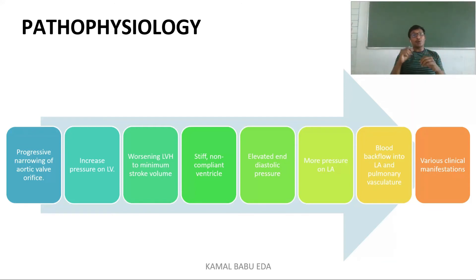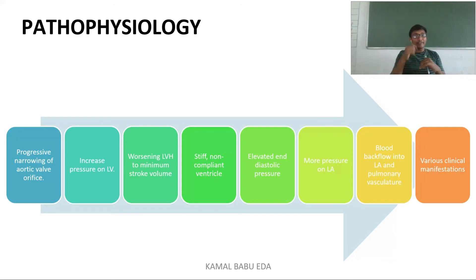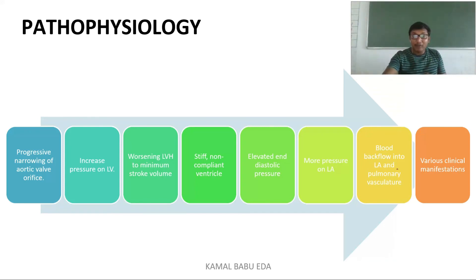Regarding pathophysiology: due to various causes, there is progressive narrowing of the aortic valve orifice, building pressure in the left ventricle. This causes left ventricular hypertrophy, resulting in stiffness and a non-compliant ventricle that cannot function normally. Elevated end-diastolic pressure develops, putting more pressure on the left atrium, which must work harder to push blood into the left ventricle.